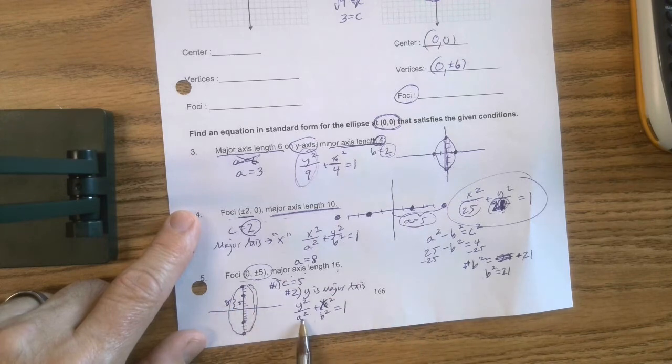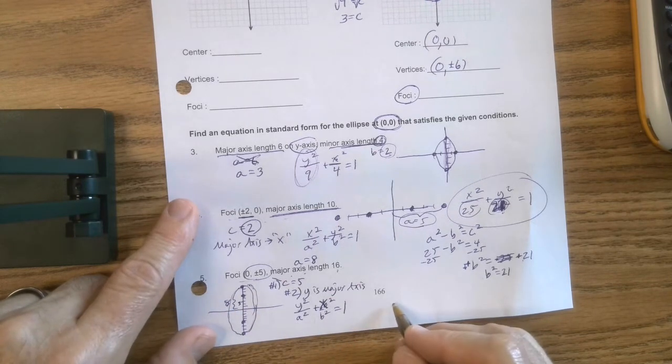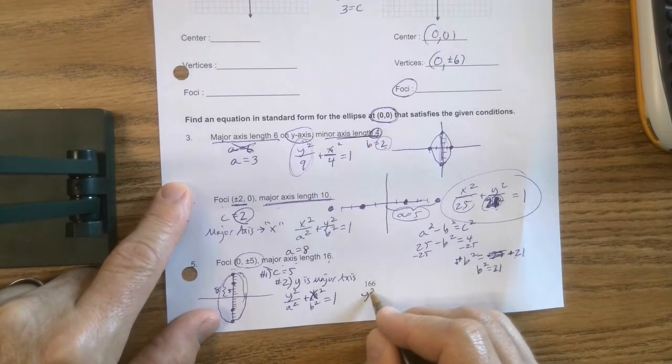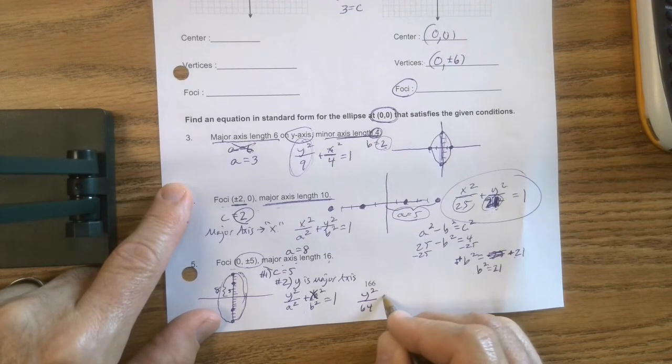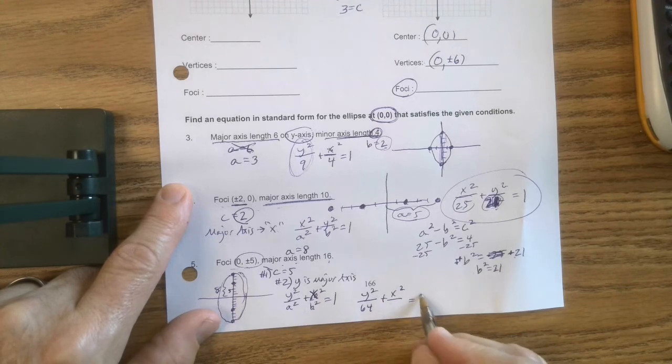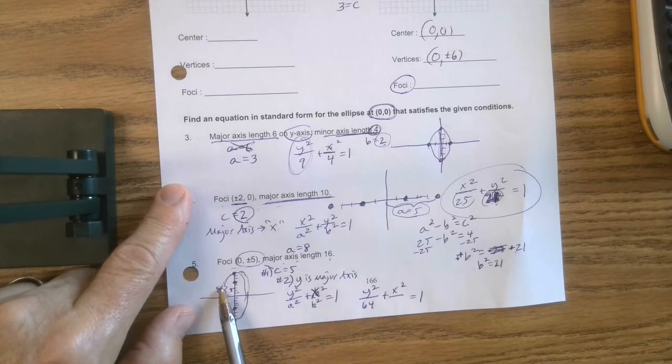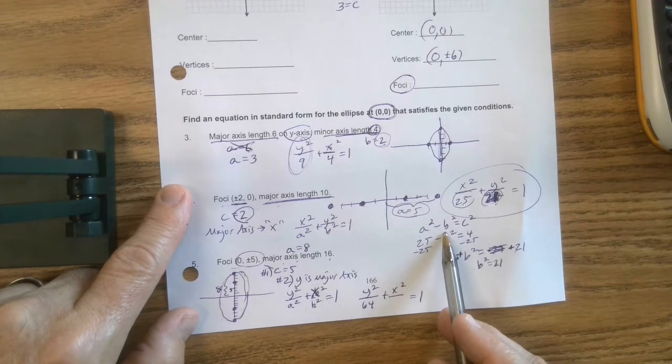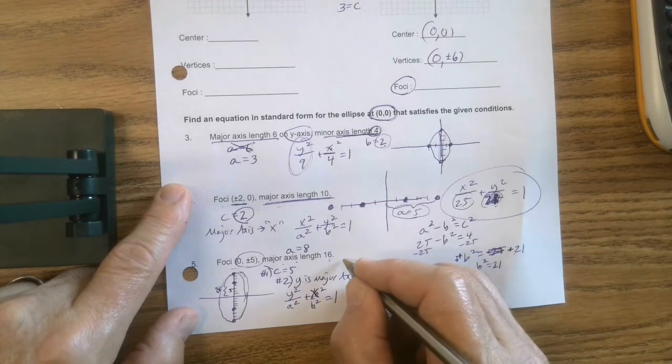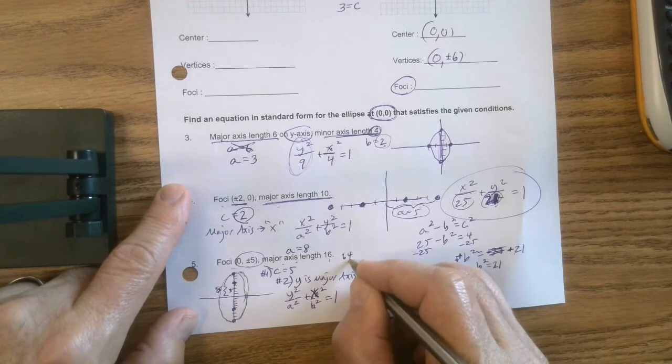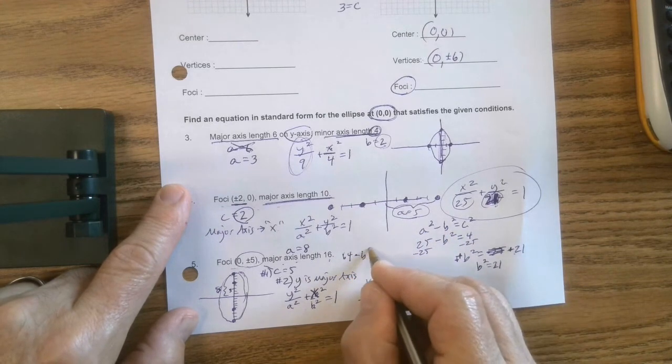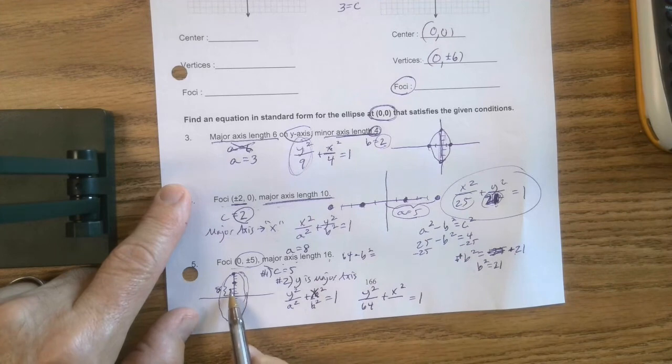And so look at it. If a is 8, I'm going to square it. And I'm going to put y squared over 64 plus x squared over, again, I've got to find b squared. And I'm going to use my knowledge of c and my knowledge of a, plugging it into this formula. So here we go.